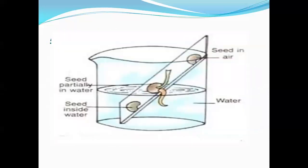Now it is activity time. Take three gram seeds and tie them to a plastic scale with cotton threads, then put them in a glass tumbler that is half filled with water, as shown in the picture, for two to three days. You will observe that only the middle seed germinates because the upper seed gets only air but not water, while the lower seed gets only water but not air. This proves that a seed needs air, water, and suitable temperature for germination.